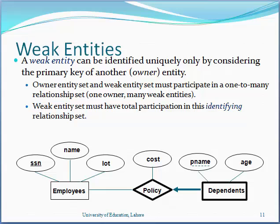Next, you can see different types of entities. An entity can be a weak entity or a strong entity. A weak entity can be identified uniquely only by considering the primary key of another entity. The primary key is the uniquely identified key of the table. A weak entity is one that can only exist if another entity also exists.